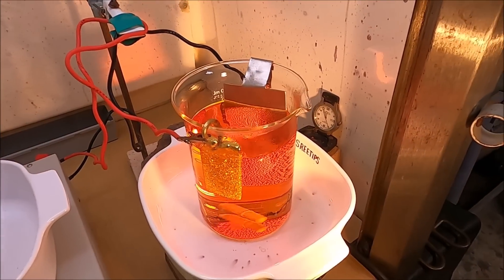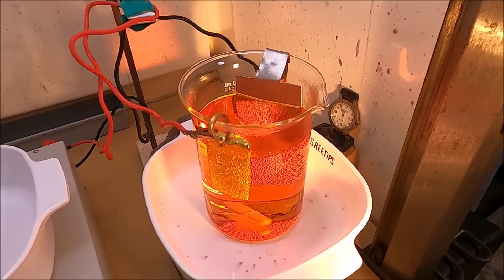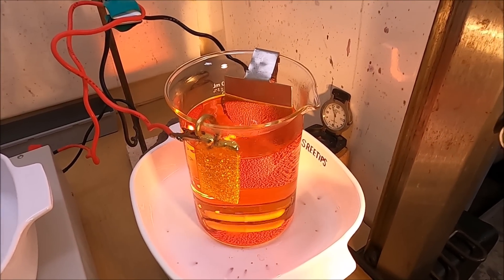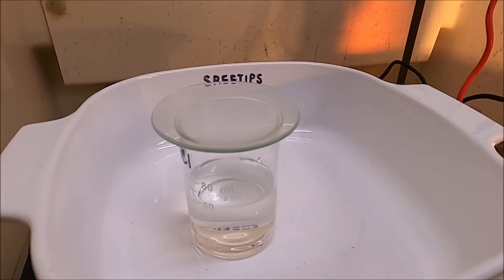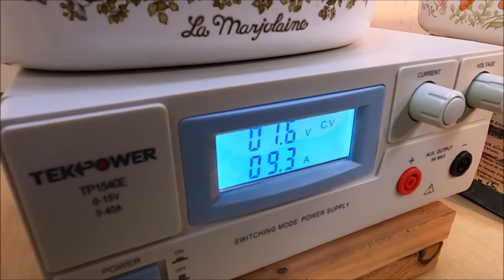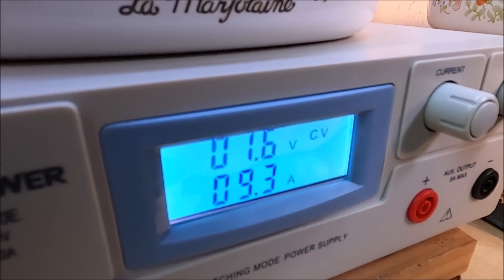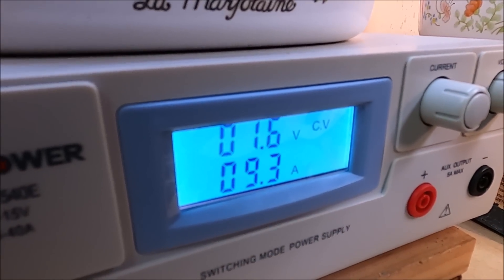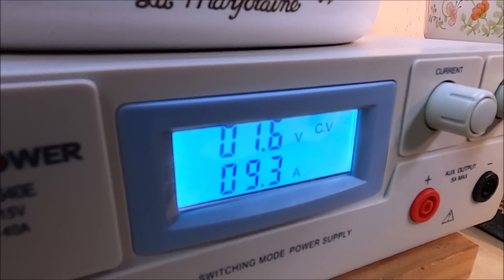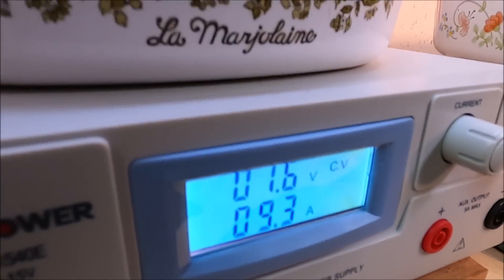It's been running for about an hour and a half, and it got dehydrated, so I added some hydrochloric acid. Now we've got the amp current flow up over 9 amps with the voltage at 1.6.